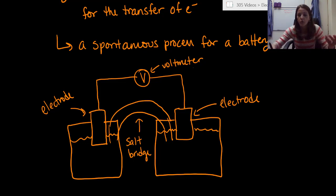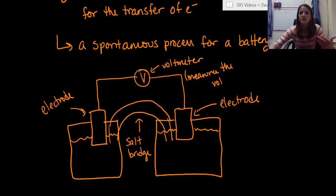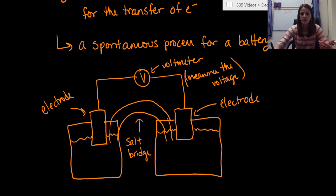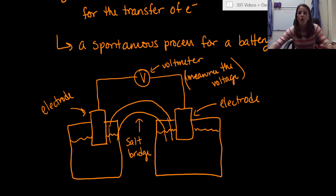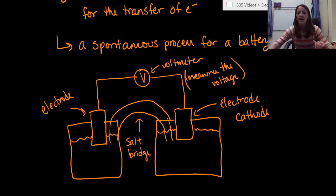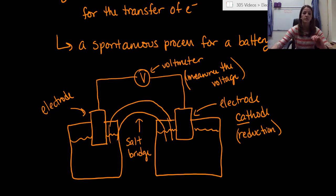The voltmeter simply measures the voltage — it measures the transfer of energy from one system to another based on potential energy. On the right side, the electrode is always, always going to be your cathode. The cathode is always on your right, and a cathode always has a reduction reaction — never oxidation.